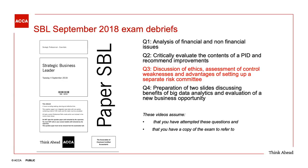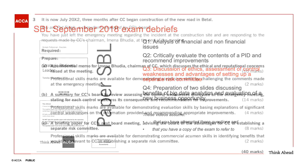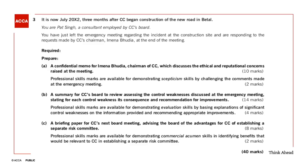Before we start looking at the question, I'm assuming that you've attempted the question and have a copy of the exam to hand. Question three is broken into three parts: the first asking us to produce a memo discussing ethical and reputational concerns raised at a meeting; the second asking us to review control weaknesses and for each weakness discuss its consequence and recommend improvements; and the final part asking us to advise the board on the advantages of setting up a separate risk committee. Before we get into the details, there's a set of six practical steps we should follow on every Strategic Business Leader question.